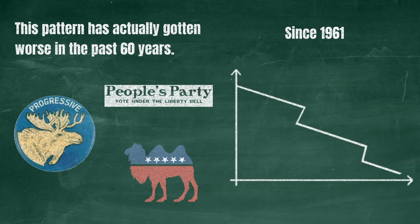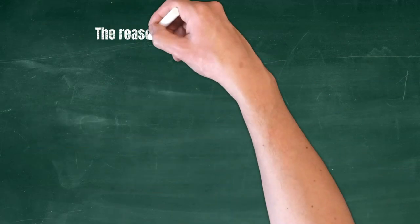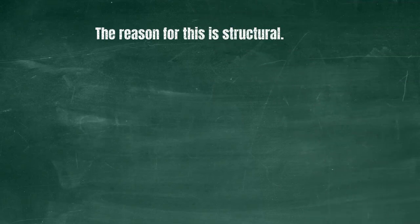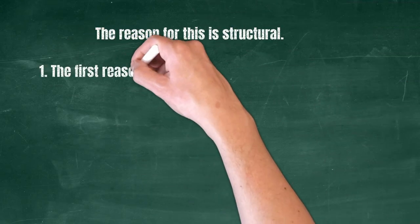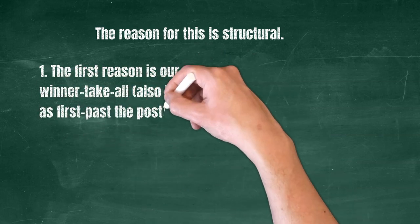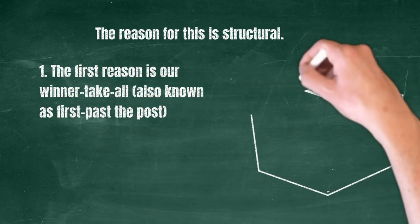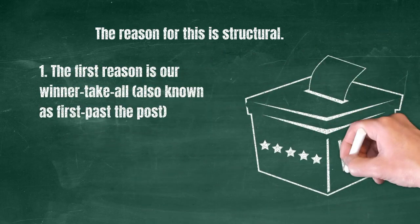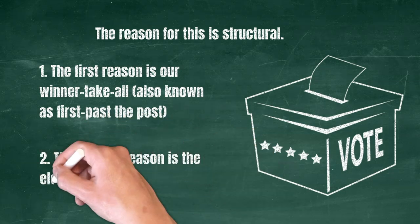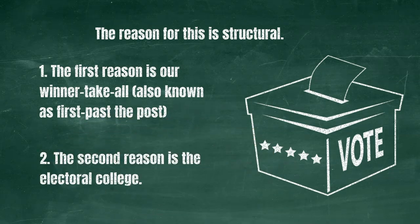The reason for this is structural and is based on two main features of the American electoral system. The first is our winner-take-all system, also known as first-past-the-post or single-member plurality voting. And the second is the Electoral College. Let's explore each in detail.